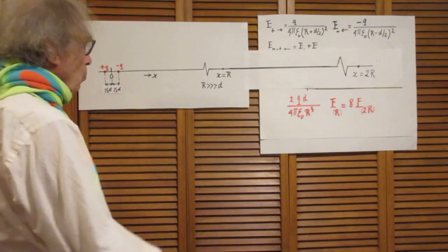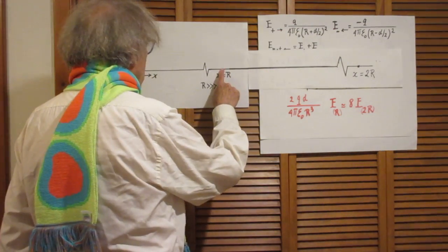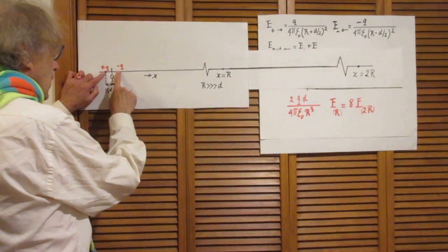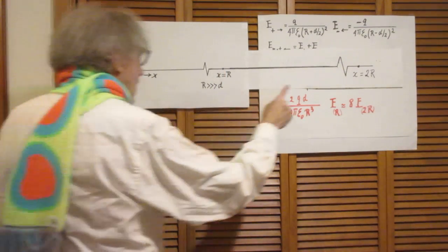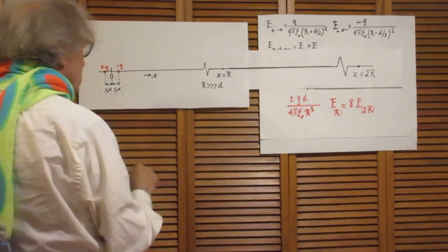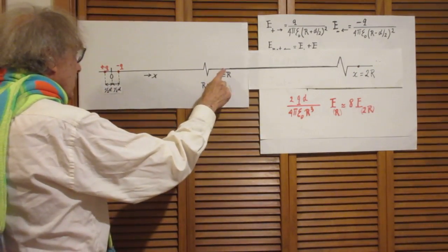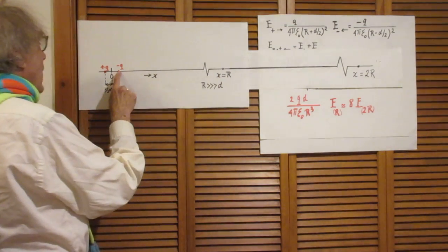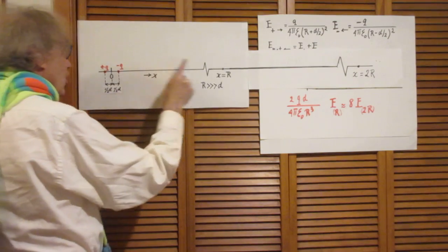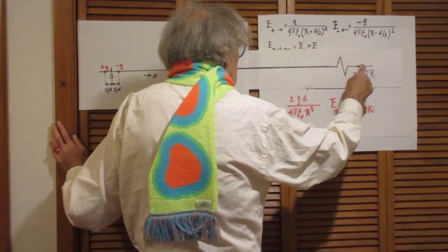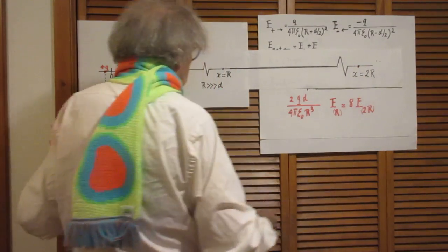And my question is what is the ratio of the electric field here due to these two charges and the electric field here due to these two charges. We already know that the electric field here will be in this direction because the minus Q charge is closer to this point than the plus Q. So also here the electric field will be in this direction.